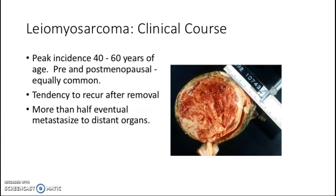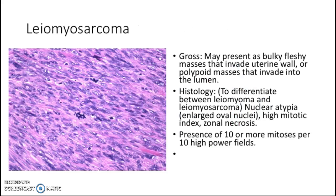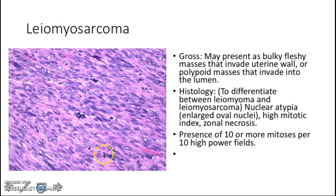Leiomyosarcoma has a peak incidence between 40 and 60 years of age and can present in both pre- and postmenopausal women. It has a tendency to recur after removal, and more than half eventually metastasize to distant organs. Grossly, it presents as a bulky, fleshy mass that invades the uterine wall, or a polypoidal mass. Histologically, to differentiate leiomyoma from leiomyosarcoma: leiomyosarcoma has nuclear atypia with enlarged oval nuclei, is more cellular, has a high mitotic index with atypical mitosis, and you can also see zonal necrosis.